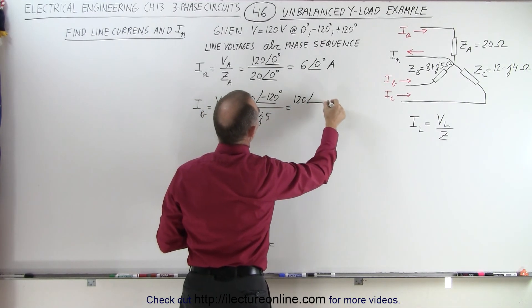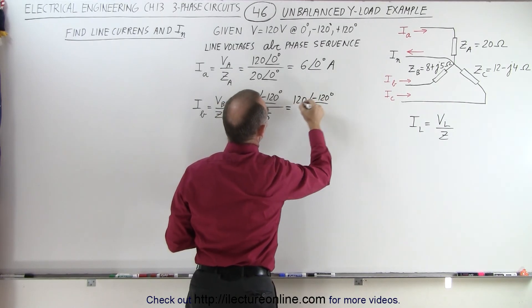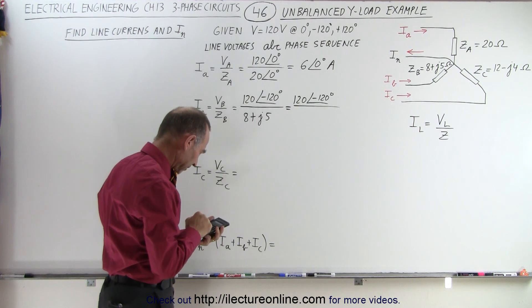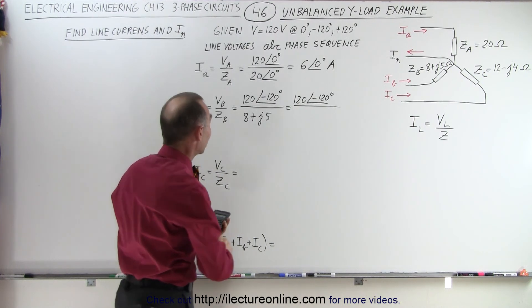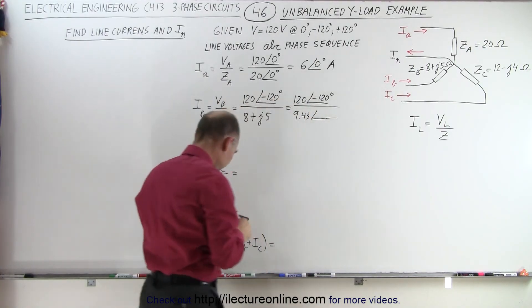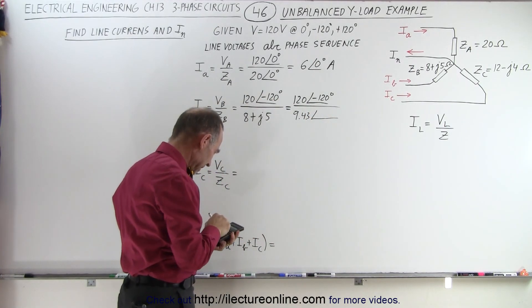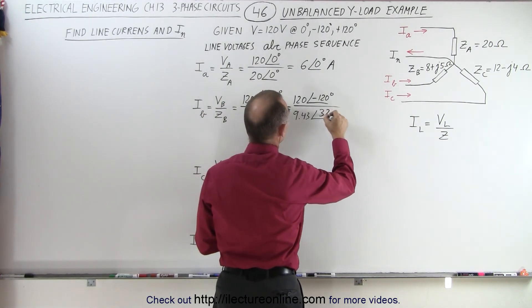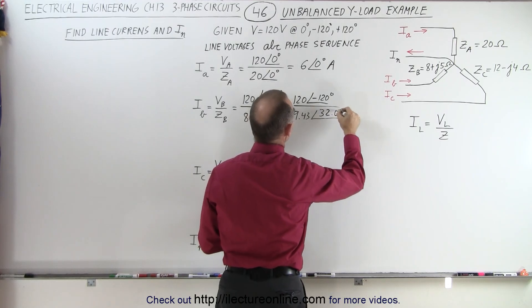That's 120 with a phase angle of minus 120 degrees, divided by 64 plus 25. Take the square root, that is 9.43 with a phase angle of 5 divided by 8. Take the inverse tangent of that, which is 32.01. I'll just call it 32.0 degrees.